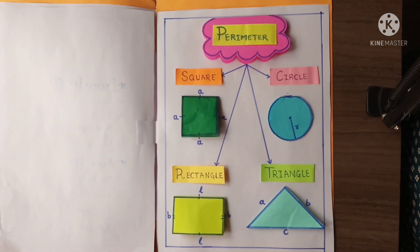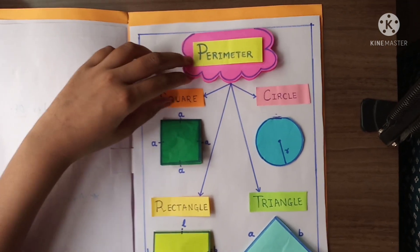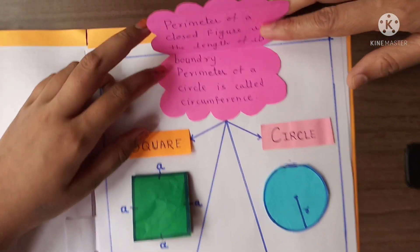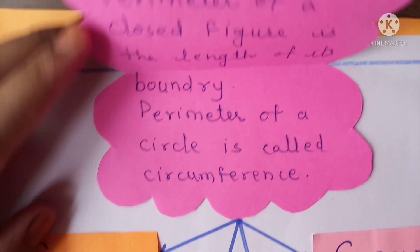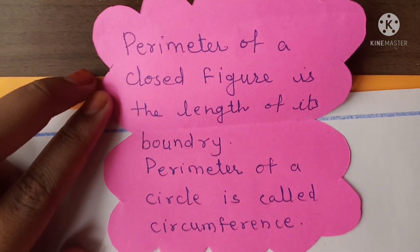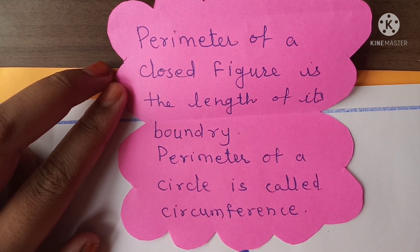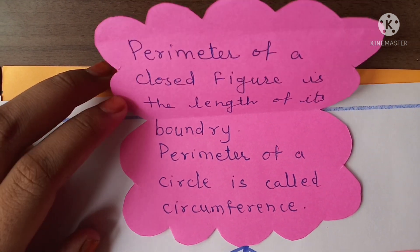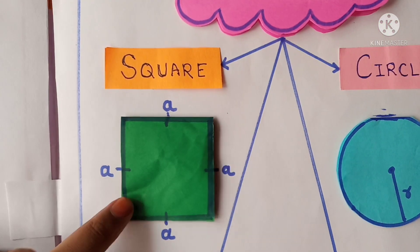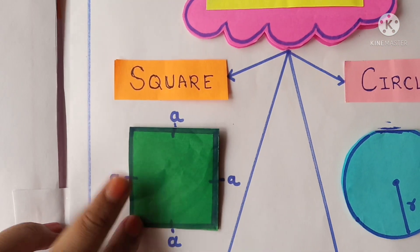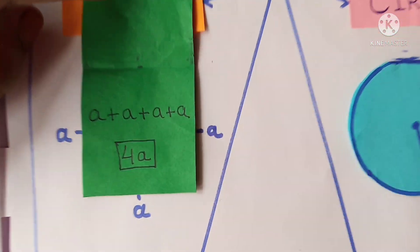Here is our first topic, perimeter. Here is the definition of perimeter. Perimeter of a closed figure is the length of its boundary. Perimeter of a circle is called circumference. Square — the perimeter of square is a plus a plus a plus a, that's 4a.